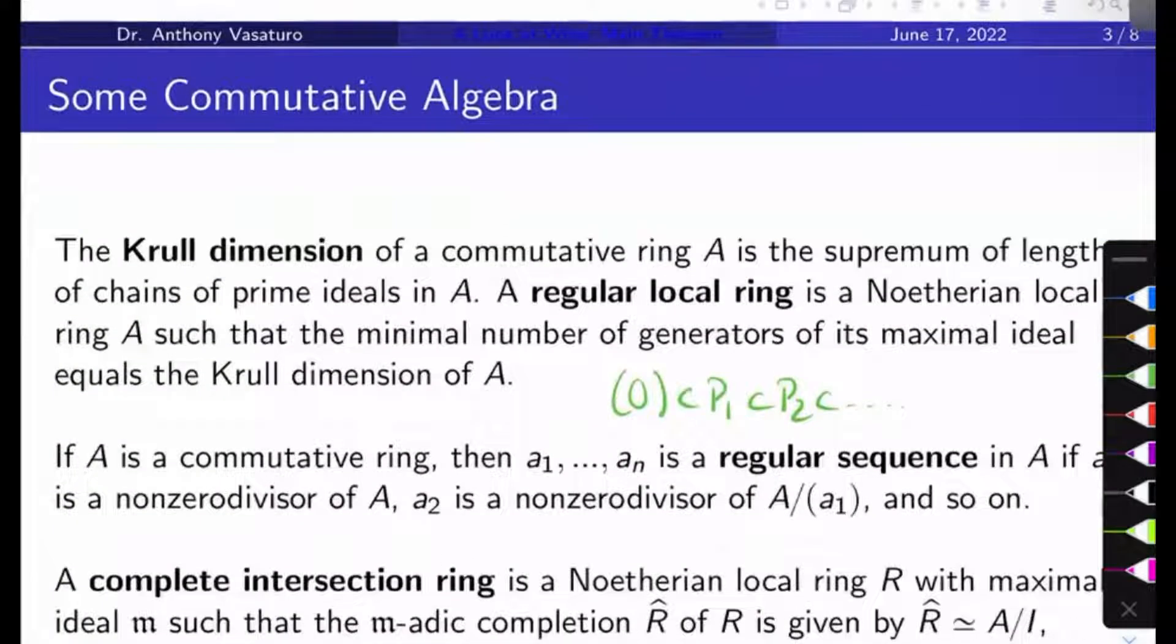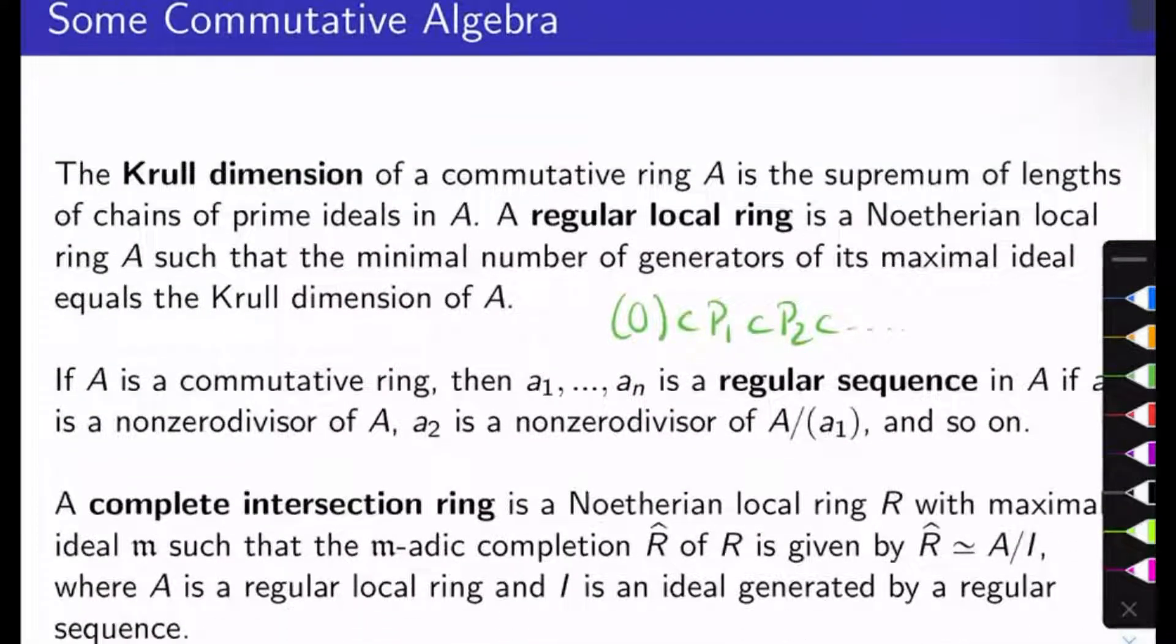To press on, we're going to need some commutative algebra. First, the Krull dimension of a commutative ring A is the supremum of lengths of chains of prime ideals in A. We're taking nested chains of prime ideals like 0 to P1 to P2 and so on. What's the supremum of the lengths of all possible chains in my ring? That's the dimension of the ring.